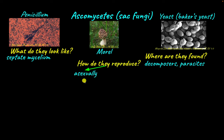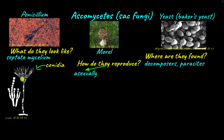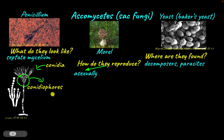Ascomycetes can reproduce asexually through the formation of conidia. Conidia look like white bead-like structures — these are the asexual spores. Conidia are produced exogenously on structures called conidiophores, which are modified mycelium. On the tip of the mycelium, the conidia are formed.